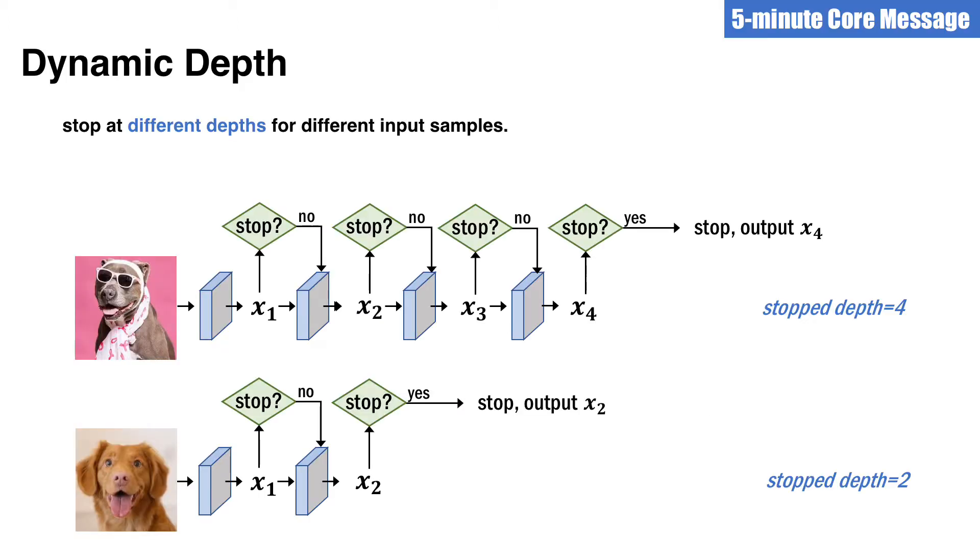This paper talks about deep learning models with dynamic depth. That is, instead of using a fixed number of layers in the architecture, in a dynamic depth model, the number of layers can be different for different input samples. For example, for the first image, we can propagate through four layers, and for the second image, we can choose to propagate through two layers only. Now the question is, why do we need this type of dynamic model?